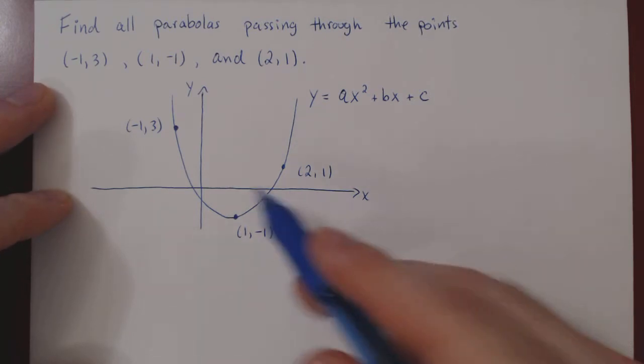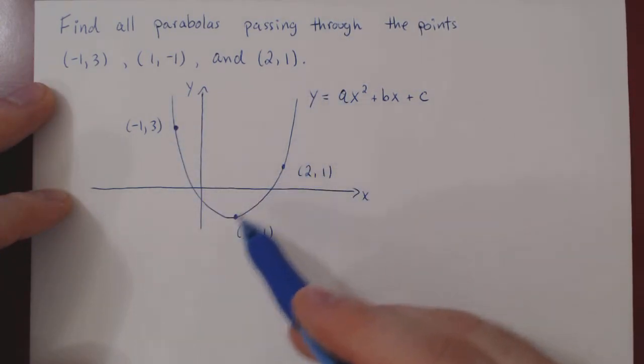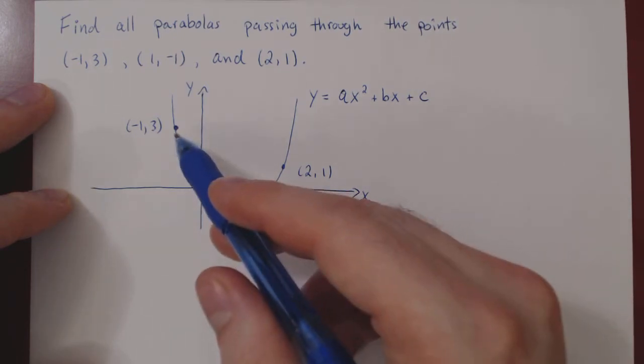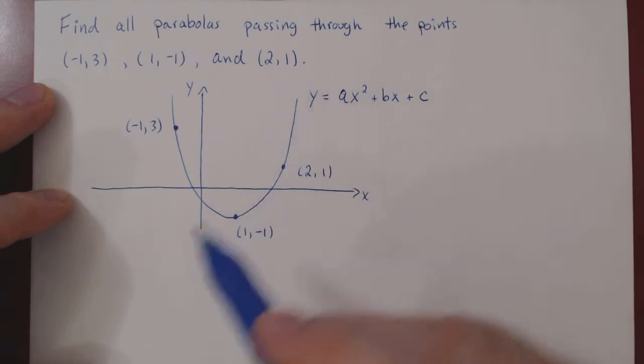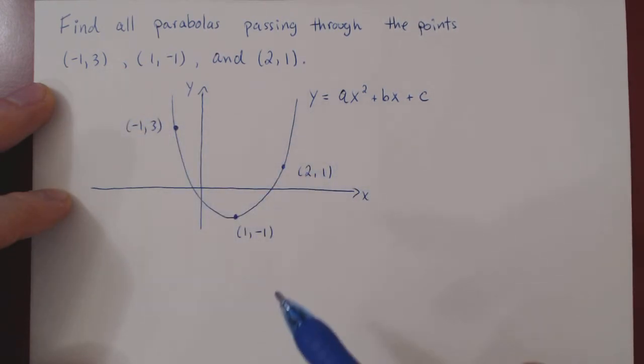Now if you think of it, we can, from the knowledge that our parabola contains these three points, construct equations. A point is on the parabola if and only if it is a solution to the equation of the parabola.